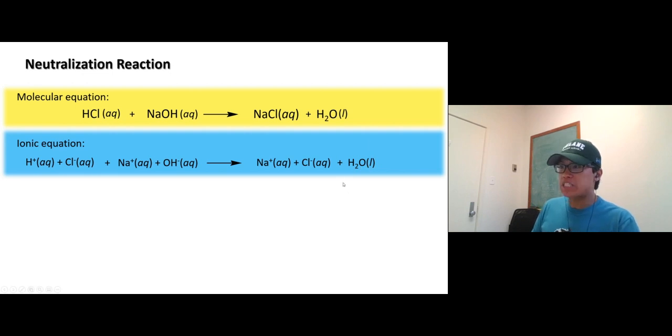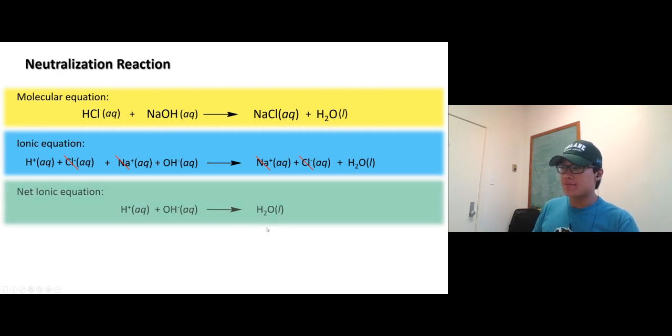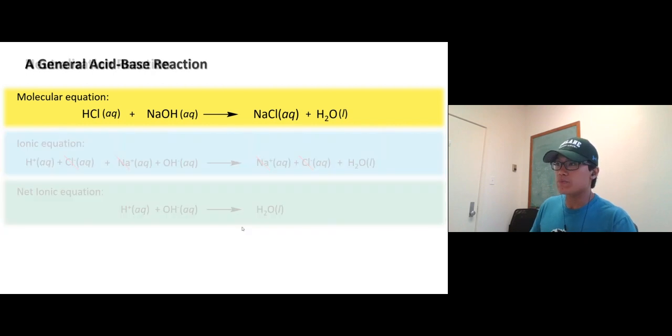Let's check who are spectator ions. I see chloride. I see sodium. So cancel them out. So what's really happening in this solution? Just making water. That's the reason why you're adding an acid and a base. You get water, they cancel each other out. That's why we call it neutralization. They cancel each other out.